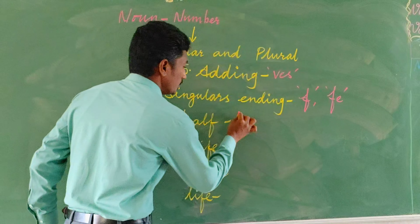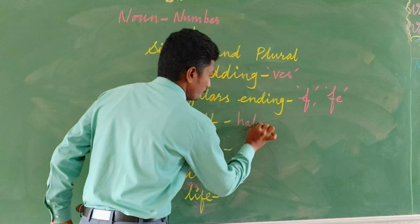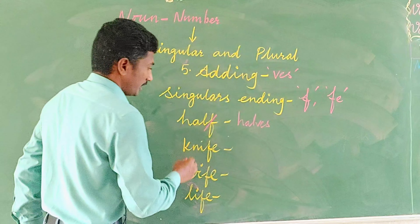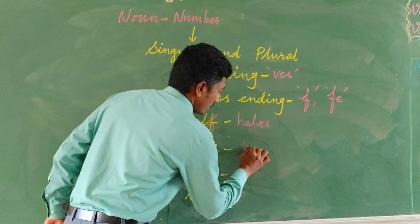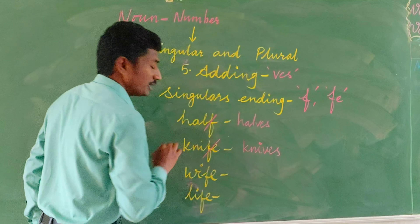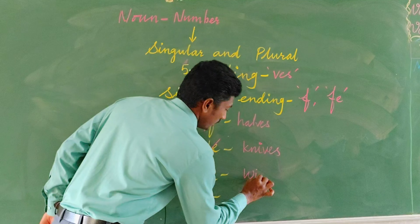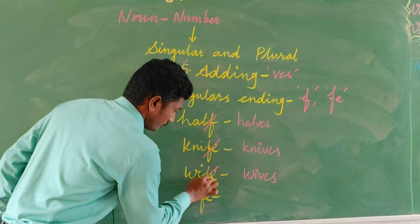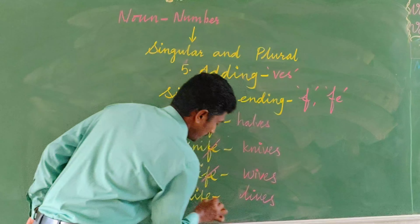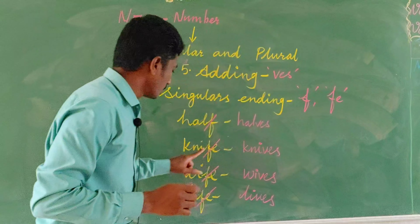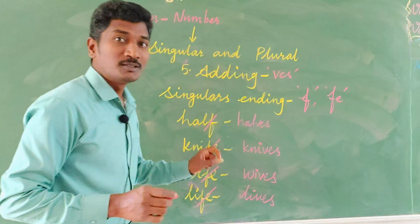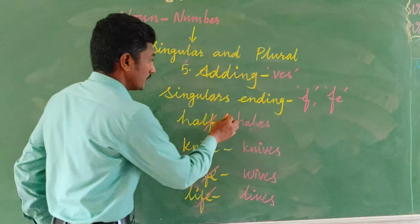You see 'half' — h, a, l, v, e, s. And 'house' — we remove the 'f'. Next, knife — k, n, i, v, e, s — knives. What we do is remove completely the 'fe'. And wife — w, i, v, e, s — wives. We remove 'fe' from wife. And life — l, i, v, e, s — lives. So: half → halves, knife → knives, wife → wives, life → lives.